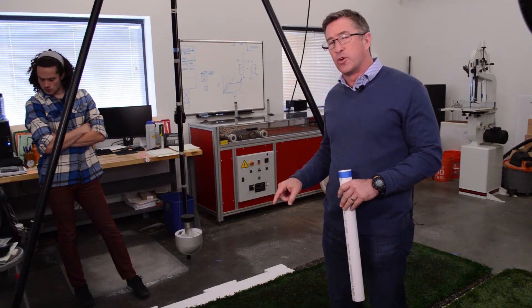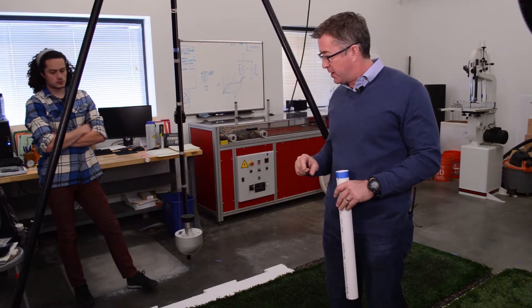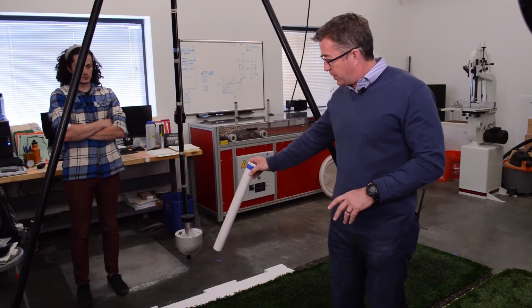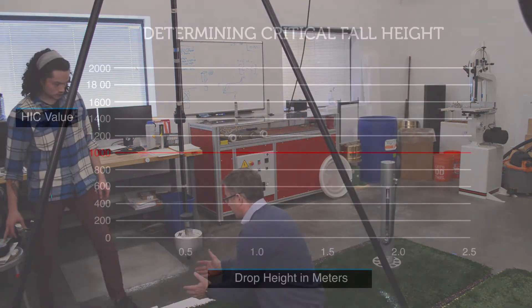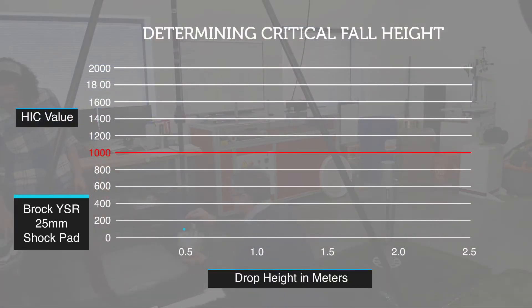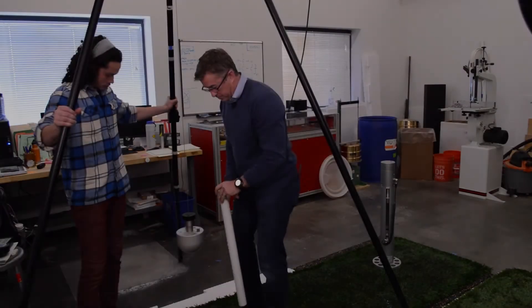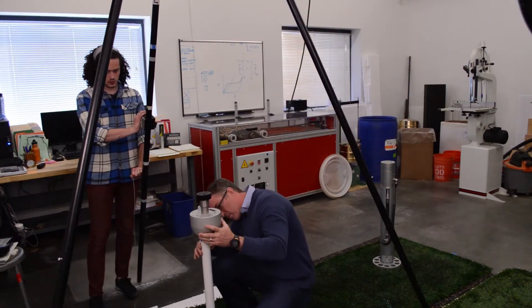For our final configuration, we have the same turf and infill now being tested over a 25 millimeter thick polypropylene shock pad. This is the Brock Powerbase YSR. First drop is 50 centimeters.